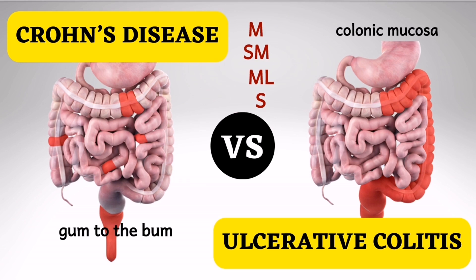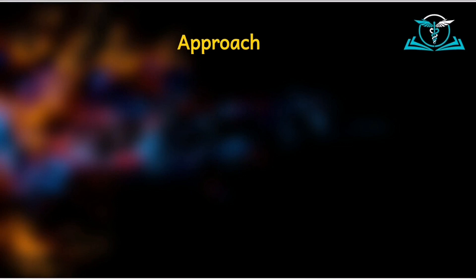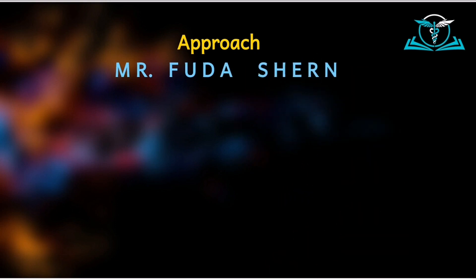With these two differentiating introductory statements said, let's see the mnemonic to use to differentiate between ulcerative colitis and Crohn's disease. Our approach will be based on the name of a man called Mr. Fylda Shen. We say that Mr. Fylda Shen has inflammatory bowel disease, and we are going to use the letters of this name to differentiate between the two forms of inflammatory bowel disease.